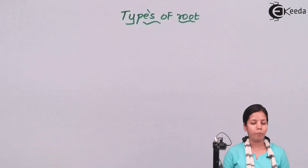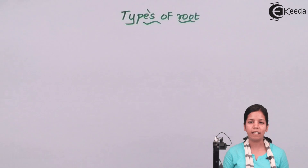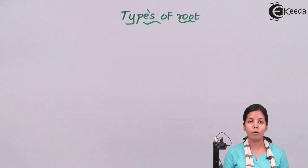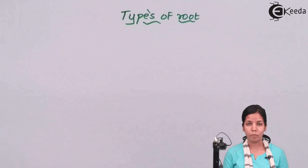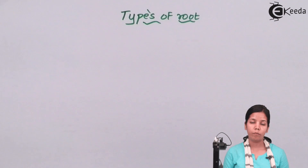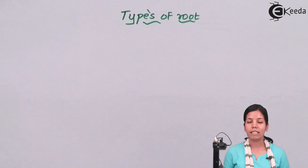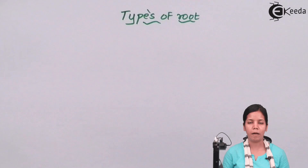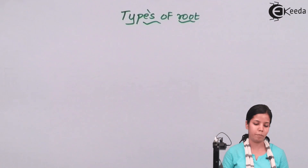Tap roots basically develop from the radicle. When I say radicle — whenever you sow a seed inside soil, the small growth that comes out, or whenever your mom sprouts seeds, the small growth that comes out is the radicle, and from this radicle the root which grows is nothing but tap roots. Tap roots can be primary, secondary, and tertiary. The primary is the main part of the tap root, whereas secondary and tertiary are just the subordinate or associate parts.